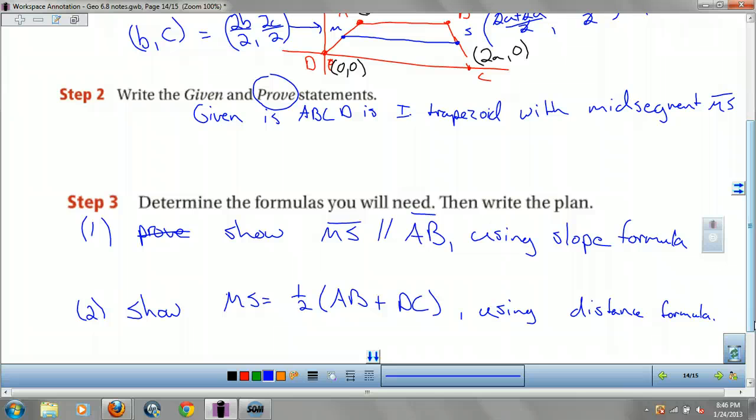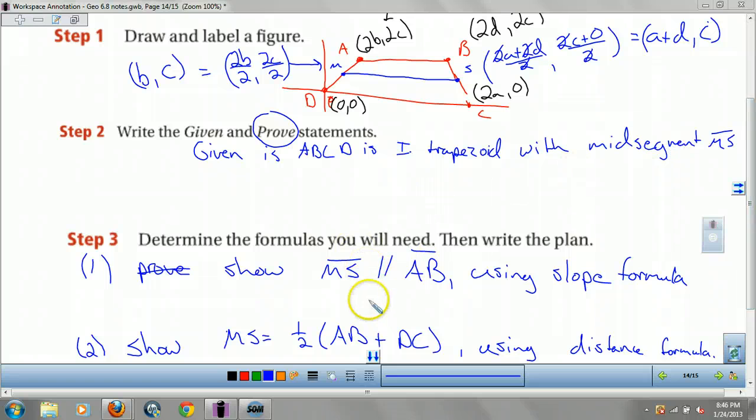For the slope one, I do kind of want to go through that one really quick. What's your slope? Your slope of AB is going to be what? Change in y over your change in x, right? Which is just zero. Slope is zero because 2c minus 2c is zero. For ms, it would be change in y, c minus c, over your change in x, which is just zero. So since their slopes are the same, they are parallel. That one's easy. The distance one we all have to do.